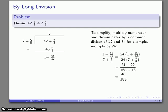So our actual quotient is going to be 6 and 46 over 180 thirds, 6 and 46 over 180 thirds.